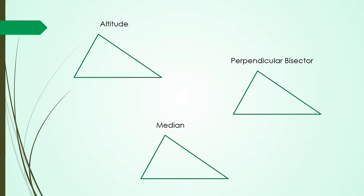We're going to look at three things: altitude, median, and perpendicular bisector inside a triangle. First, altitude is this red line here — if we want to find the area of a triangle you'd have your base, and altitude is the same thing as the height of the triangle. Now for the median, you need to find the midpoint first, and then from the midpoint to the opposite vertex is going to be the median. The two red lines here mean that this part and this part are equal.